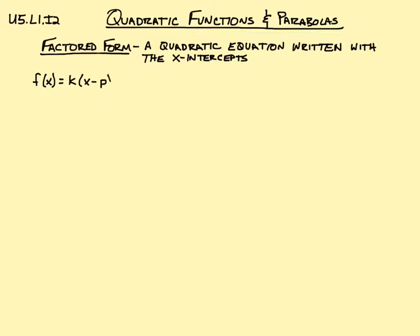So if we have f of x equals k times x minus p times x minus q, this p and q are our x-intercepts — the values where it crosses the x-axis. The k is a constant, and every parabola has its own value of k. A lot of times it's 1, sometimes it's something else, but it's unique for each individual parabola.